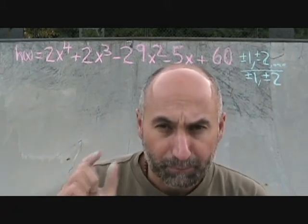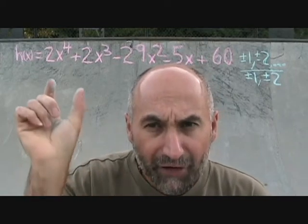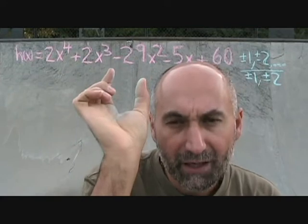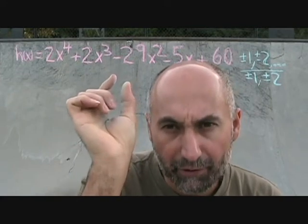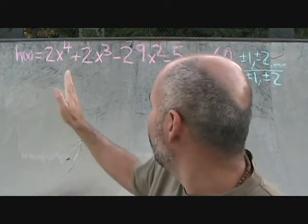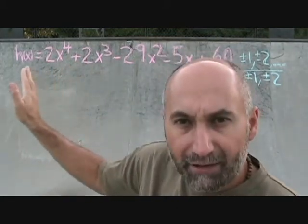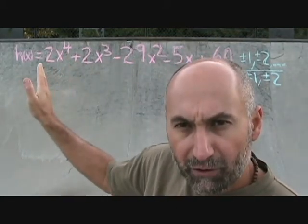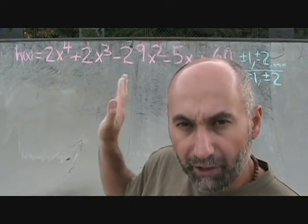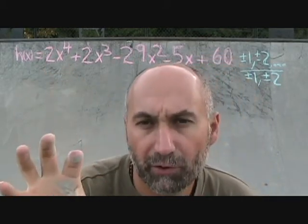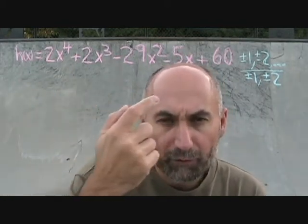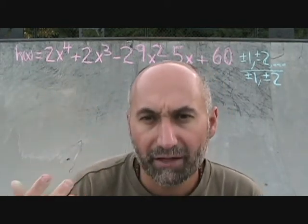Keep in mind: if you had any gaps in the descending powers, you would have to put a zero placeholder there. Right now we don't have any gaps — all the x terms are descending in order, and there are no skips from x to the power of 4 down to x squared. It's all descending in order, so we don't have to put any zero placeholders.